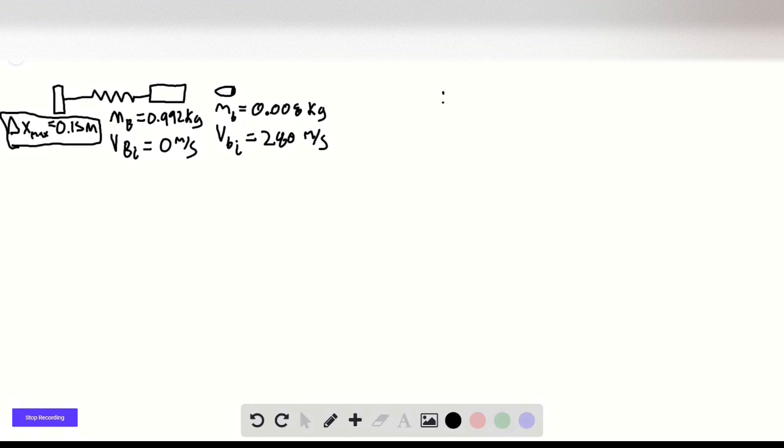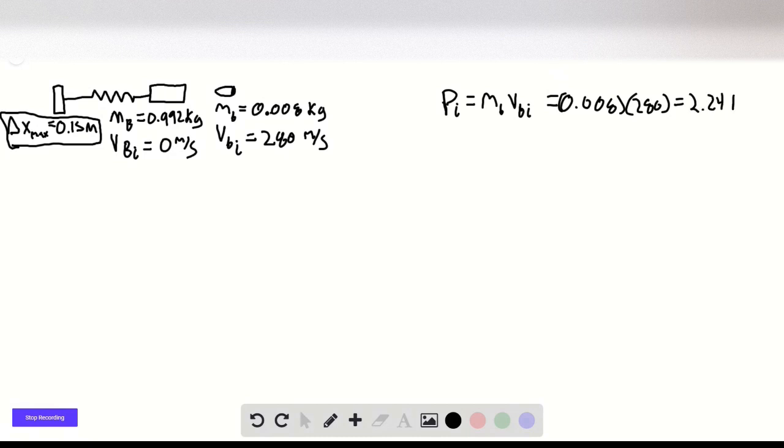So our initial momentum, we'll call this P_i, equals the mass of the bullet times the initial velocity of the bullet. There's no contribution from the block because it isn't moving. So this is 0.008 times 280, which equals 2.24 kilogram meter per second.